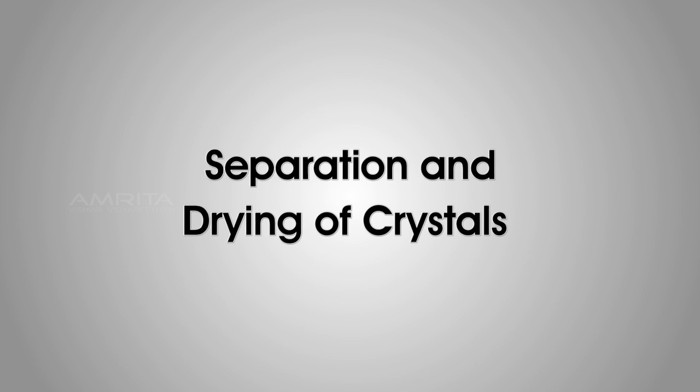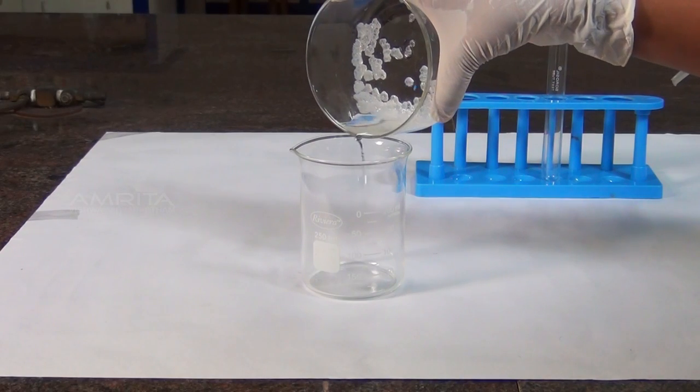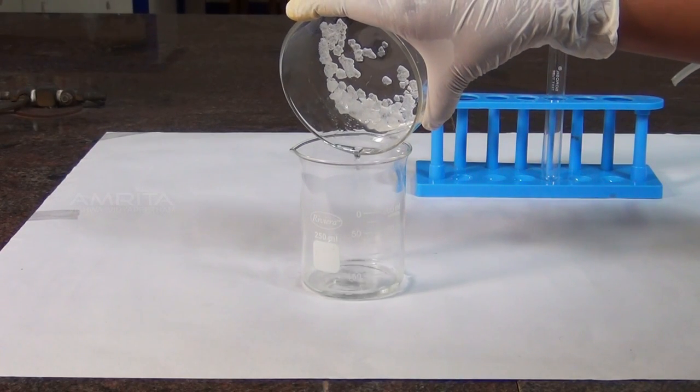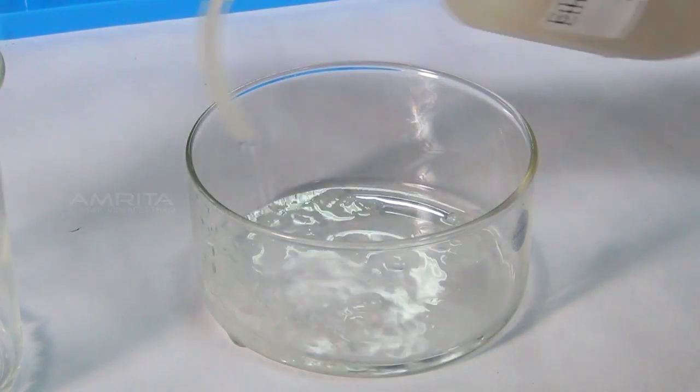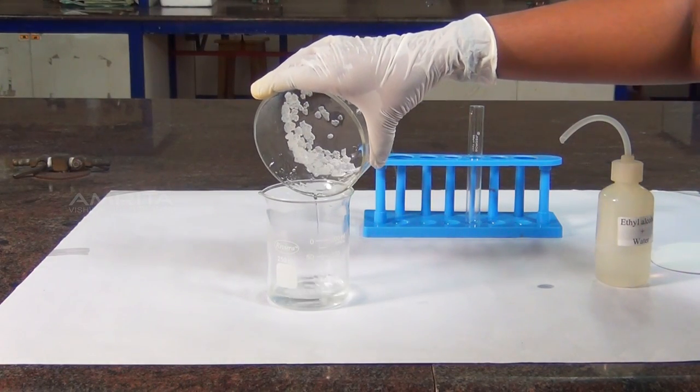Separation and Drying of Crystals. Decant the mother liquid carefully into a beaker. Wash the crystals three or four times with a little ethyl alcohol containing a small amount of cold water.